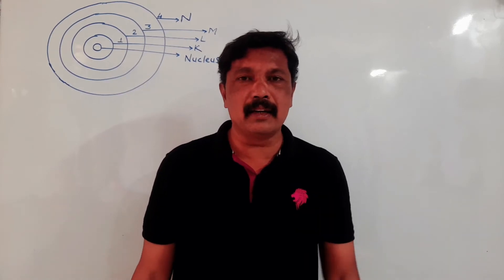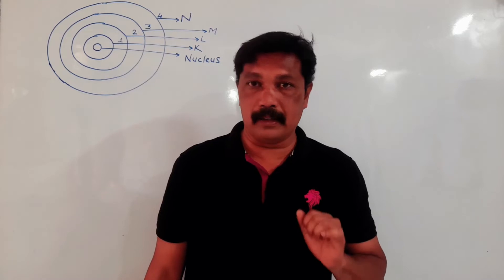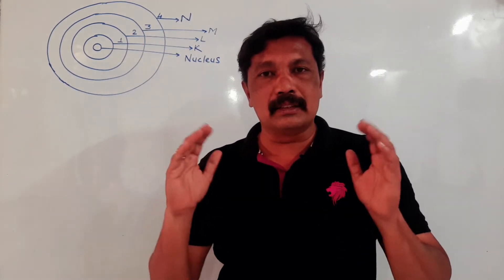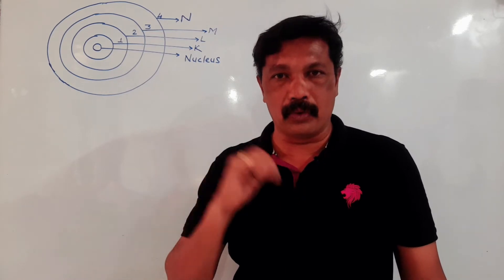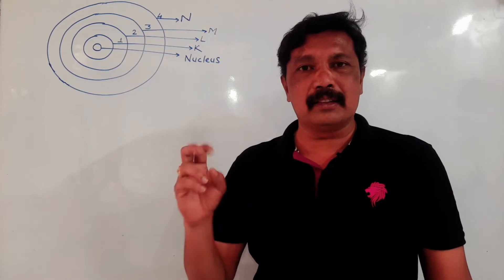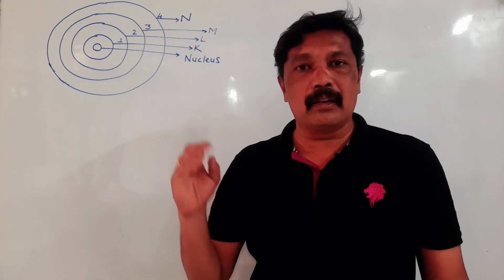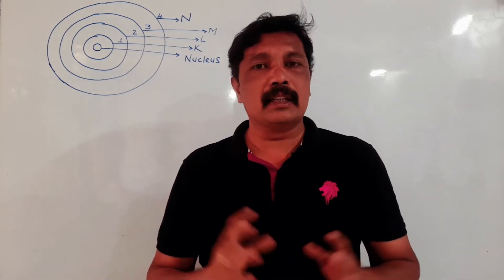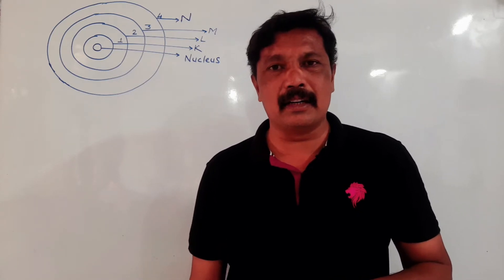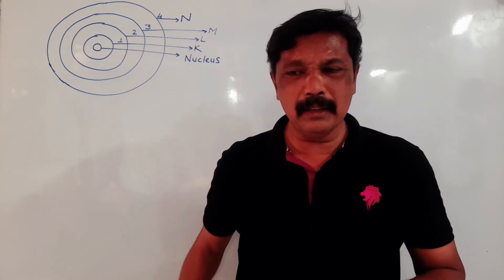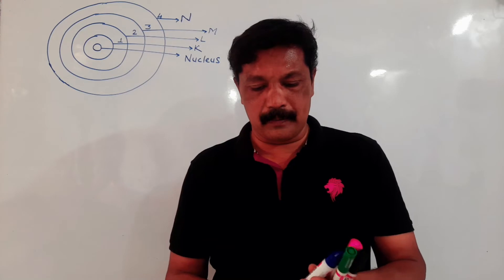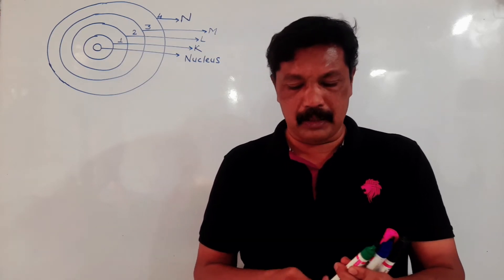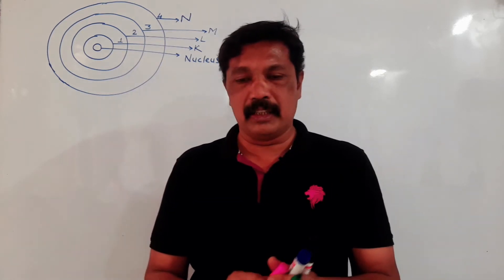Welcome back, students. In 8th standard, we have learned the structure of an atom. We have seen that at the center of an atom there is a nucleus, and this nucleus is surrounded by different shells: 1, 2, 3, 4. The first shell is named K, the second L, the third M, and the fourth N. We have also studied the electronic configuration given in 8th standard according to Niels Bohr.